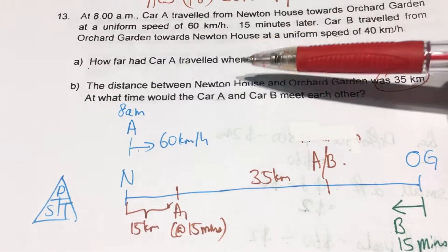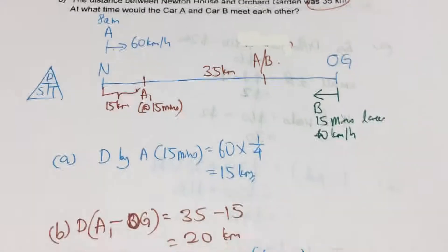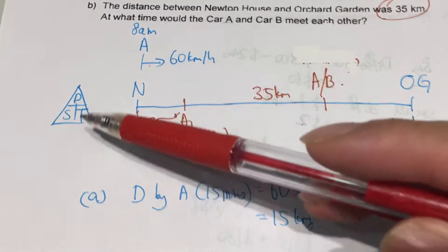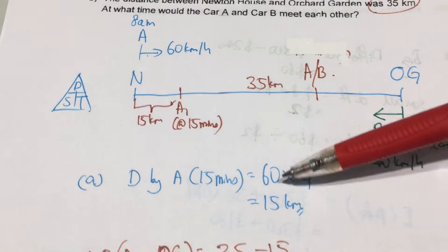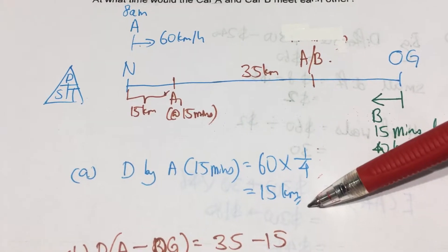So, how far had car A traveled when car B left OG? For part A, it's pretty straightforward. To find distance, it's S times T. So it's 60 times 15 over 60, which gives you 1 quarter. And that's 15km.